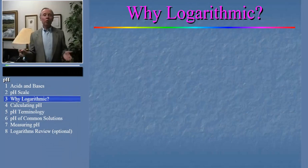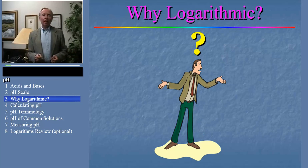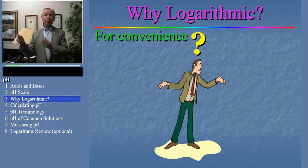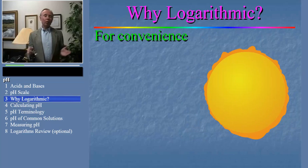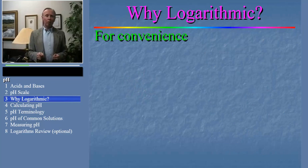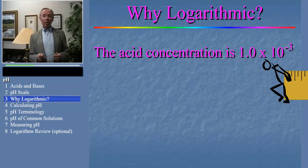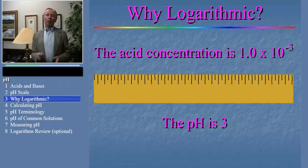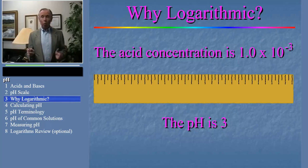You might well ask, why do we use the logarithm of the concentration? In a nutshell, the pH scale is logarithmic just for convenience. The hydronium ion concentration of an aqueous solution can range over many orders of magnitude, say from 10 molar to 10 to the minus 15th molar or even smaller. This is like the huge range of sizes in the universe, from huge stars to tiny atoms. Using a log scale avoids having to say things like the acid concentration is 1.0 times 10 to the minus 3. It's just easier to say the pH is 3. The logarithmic scale is just a convenient way to express a large range of concentrations.